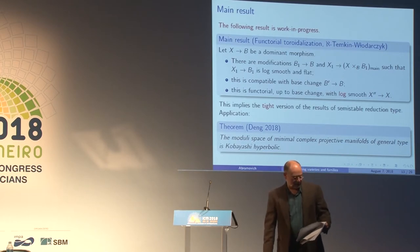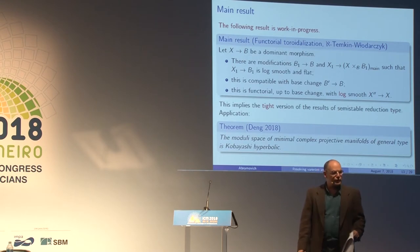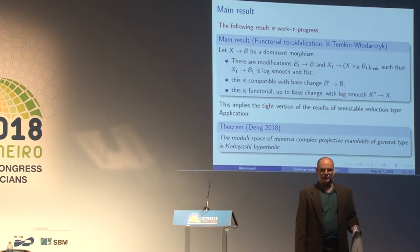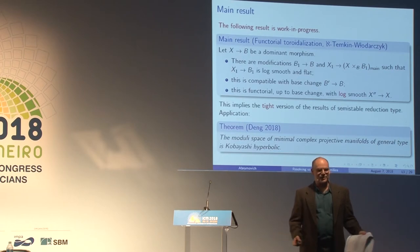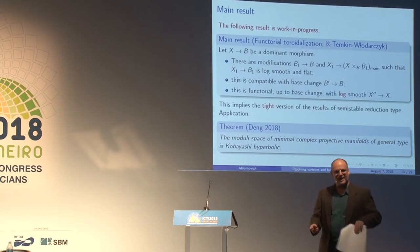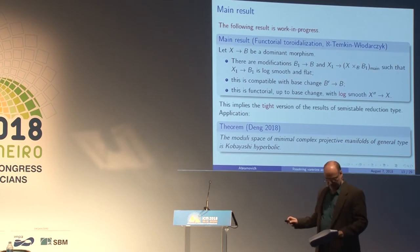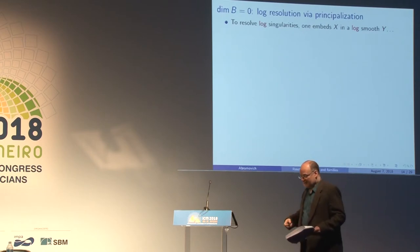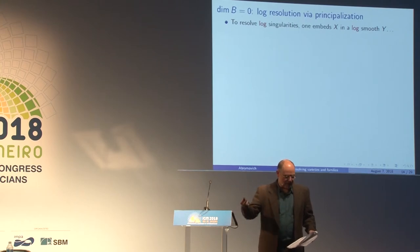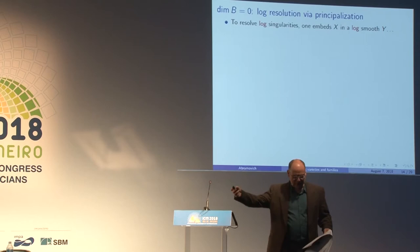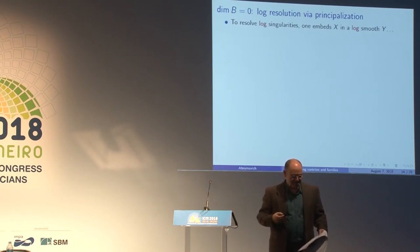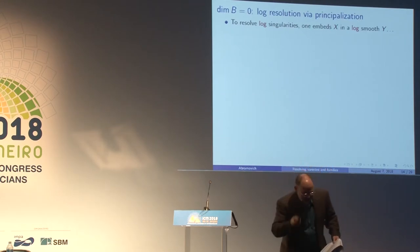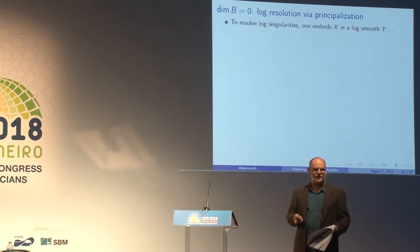I want to say something about what's involved in proving results like this. The first step is to read Janos' chapter three in the book on resolution of singularities and realize that one can actually understand and work with this. It's something every algebraic geometer should do and be happy that resolution of singularities in characteristic zero is not difficult.